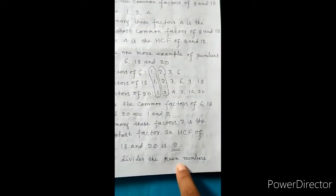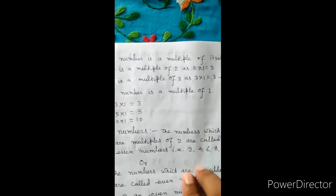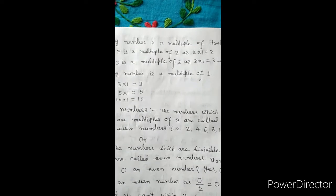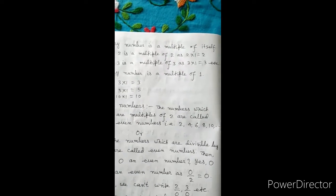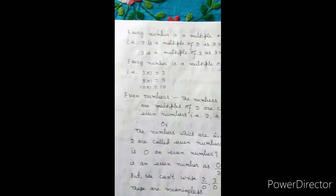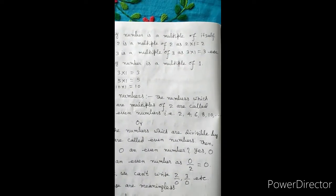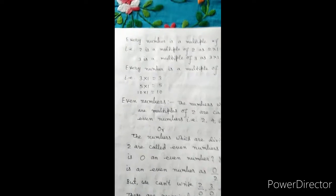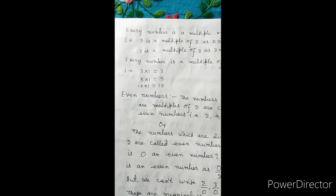HCF divides the given numbers. Every number is a multiple of itself — such that 2 is a multiple of 2, as 2×1=2; 3 is a multiple of 3, as 3×1=3. Every number is a multiple of 1, as 3×1=3, 5×1=5, 10×1=10.